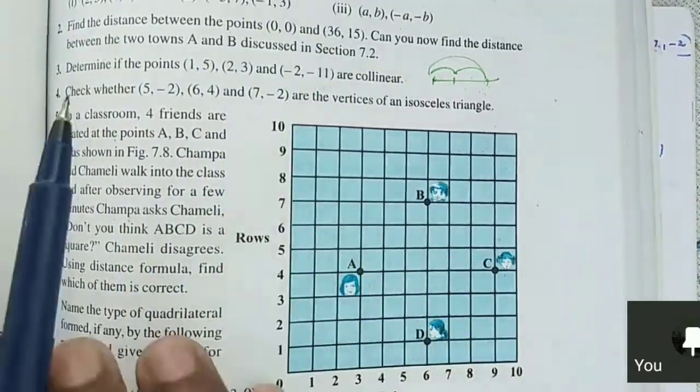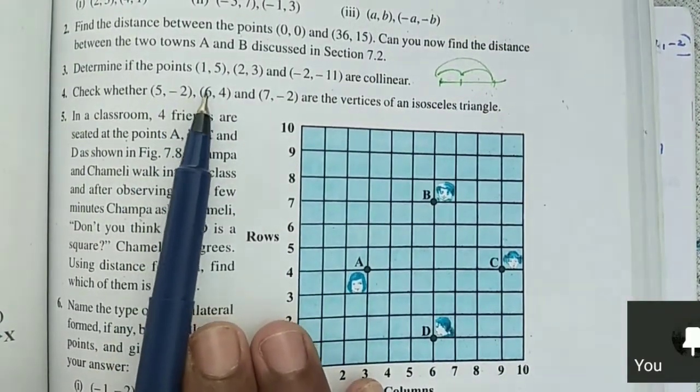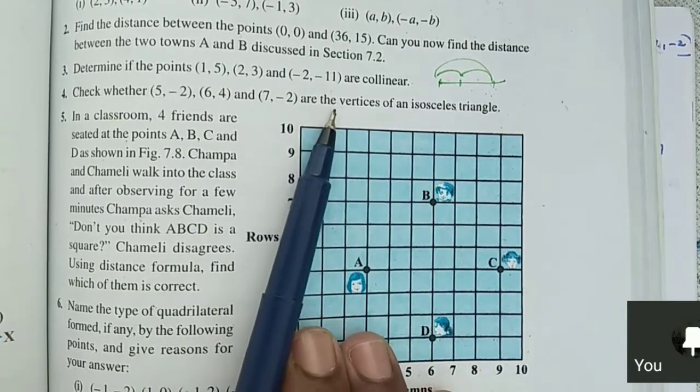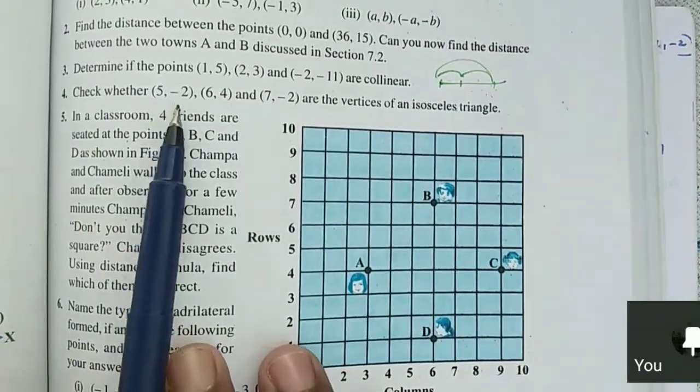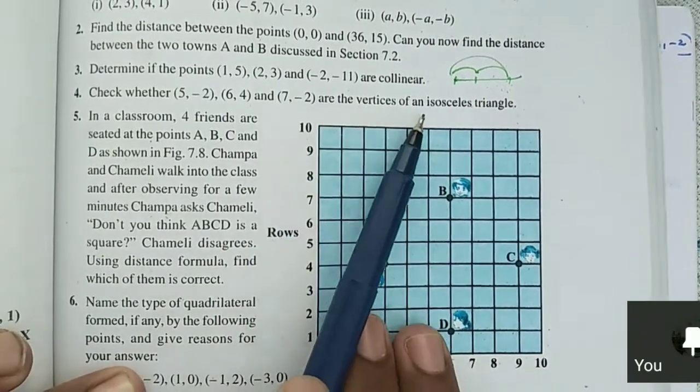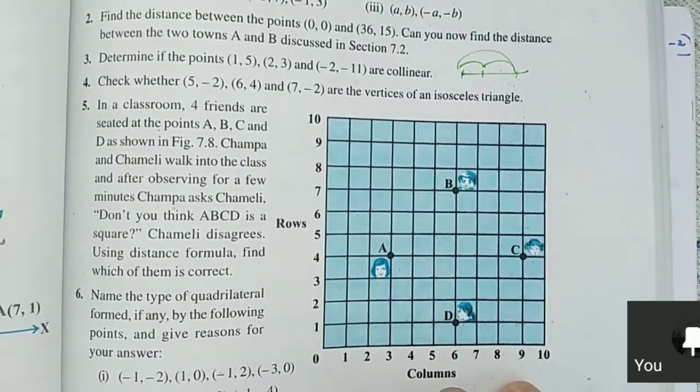So exercise number 7.1, fourth question. Check whether (5,-2), (6,4), and (7,-2) are the vertices of an isosceles triangle. Clear? We should check if the given three points will form an isosceles triangle or not.